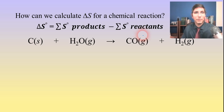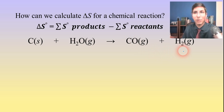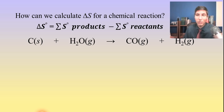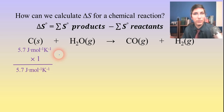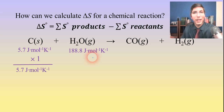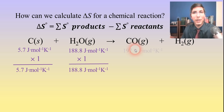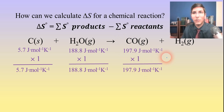Let's take a look at this reaction: carbon plus water vapor yields carbon monoxide gas plus hydrogen gas. We're going to calculate the delta S from the constants. Carbon has an entropy of 5.7 joules per mole kelvin — one mole of that, so we multiply by one. Water vapor has an entropy of 188.8 joules per mole kelvin, and there's only one mole, so we multiply by one. Carbon monoxide gas is about 197.9 joules per mole kelvin — one mole. And H₂ is 130.6 joules per mole kelvin, one mole.